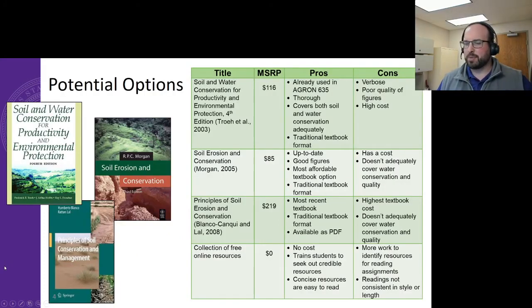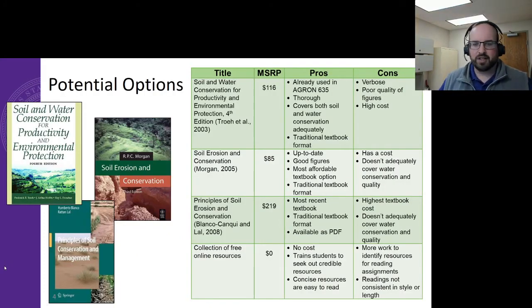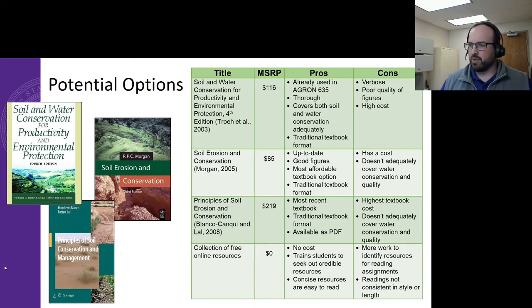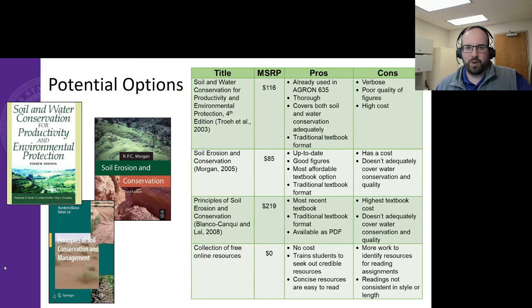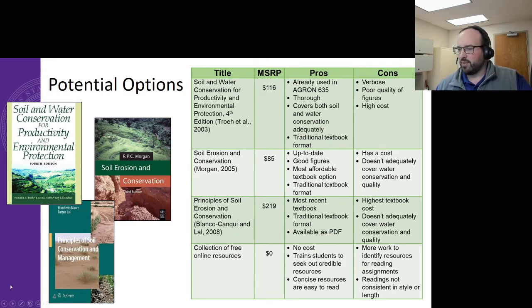So I began to look at my options within the textbooks that exist. What I found is that the other two textbooks, besides the one we had previously required, just didn't quite fit the bill for the content they included or their price. And ultimately, I went with option four, which was to develop a collection of free online resources.